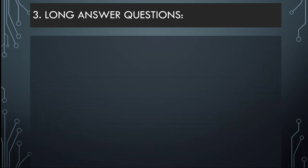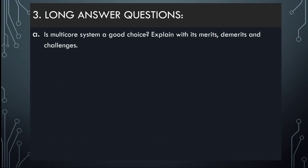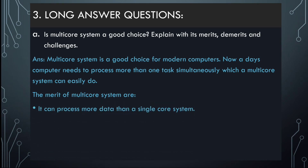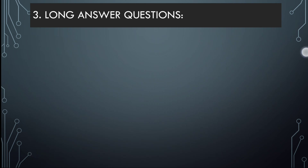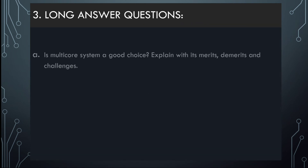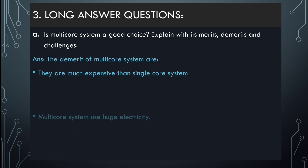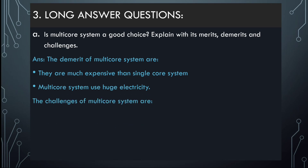Now for long answers. Number A: is a multi-core system a good choice? Definitely yes. Merits: it can process more data than a single-core system and has less traffic. Demerits or disadvantages: multi-core systems are much more expensive than single-core systems, and they use a large amount of electricity.